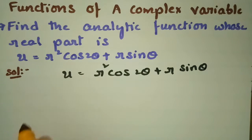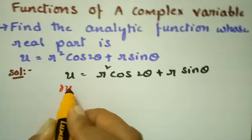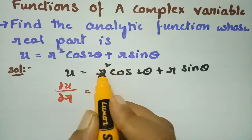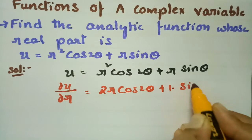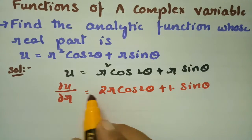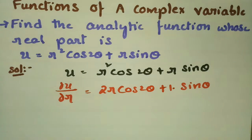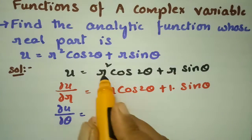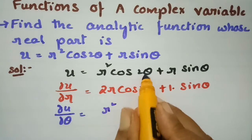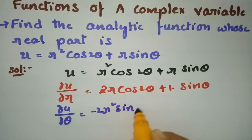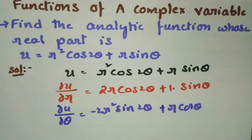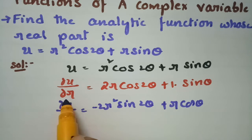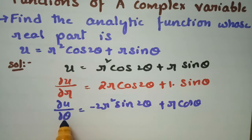For that I am going to differentiate with respect to r. So ∂u/∂r: r² becomes 2r, cos2θ remains as it is, and for r the derivative is 1 times sinθ. Now differentiating with respect to θ: ∂u/∂θ = r² times (-2sin2θ) and r times cosθ. So this is u differentiated with respect to r once and θ once.